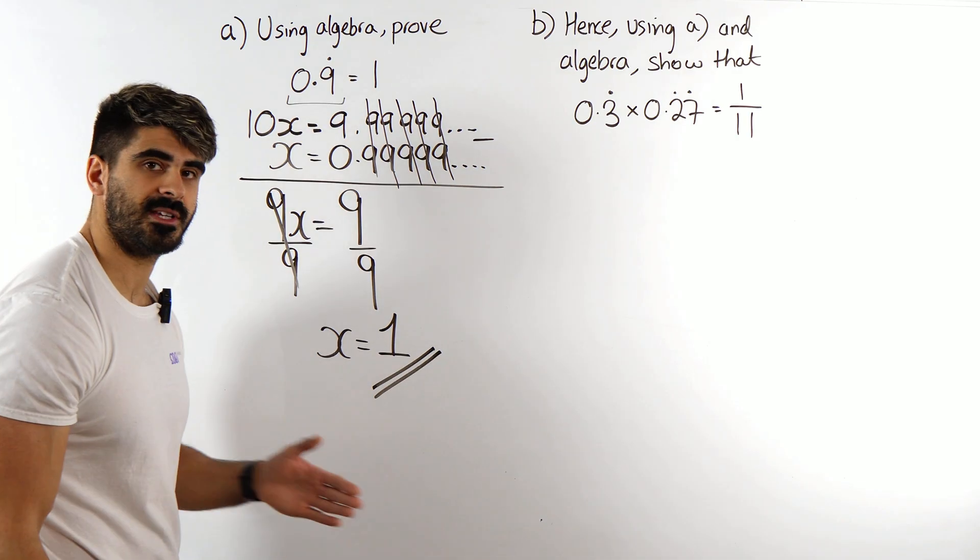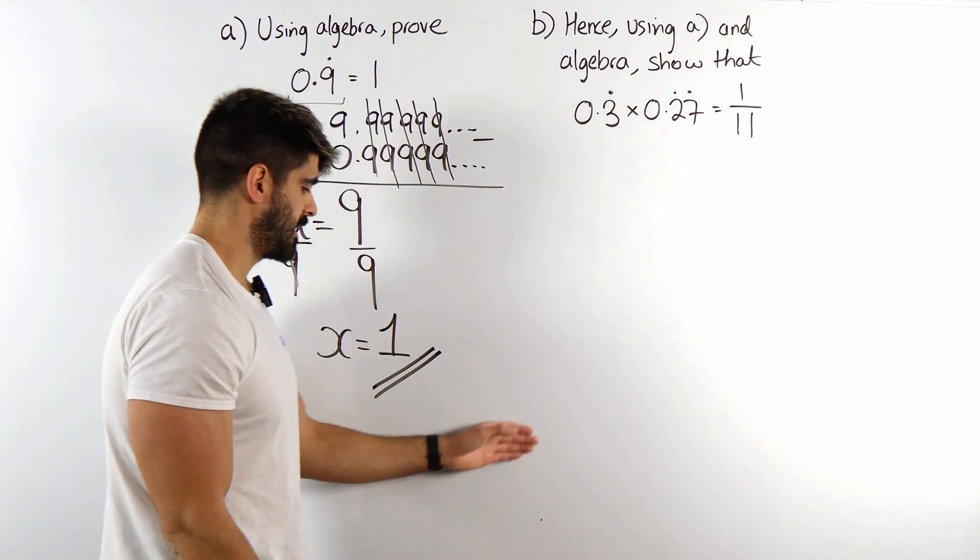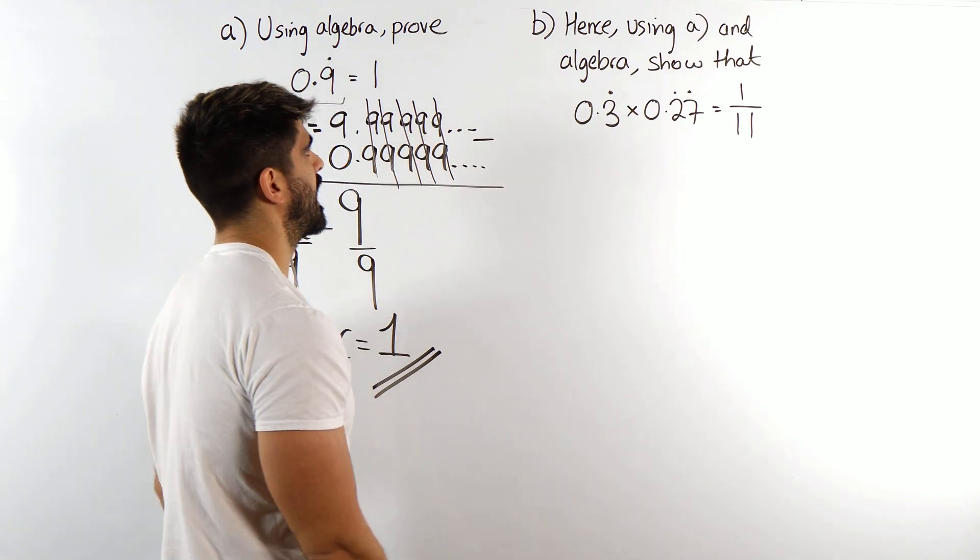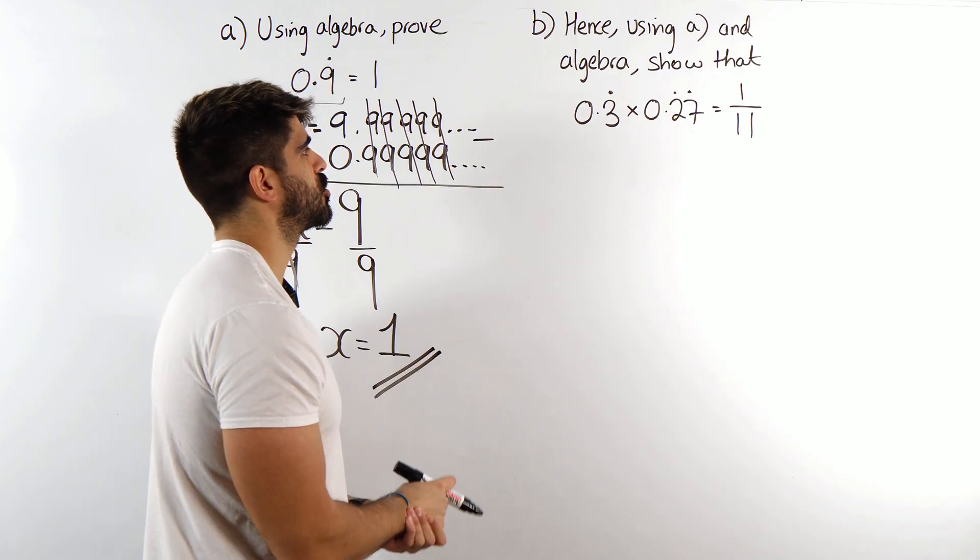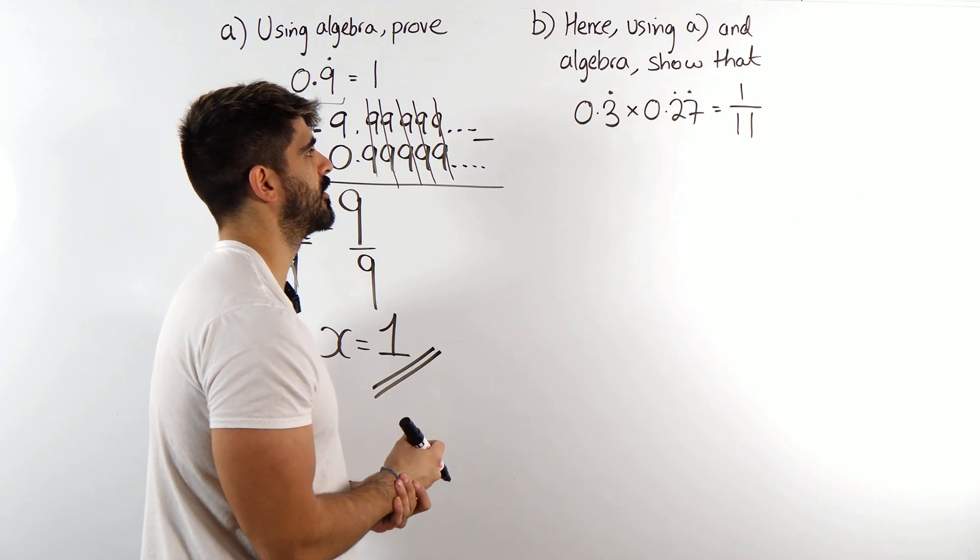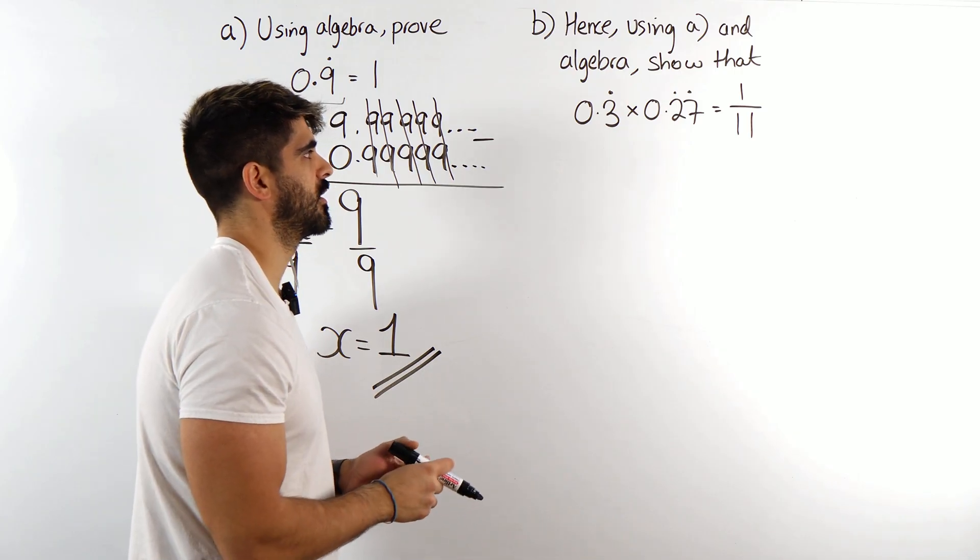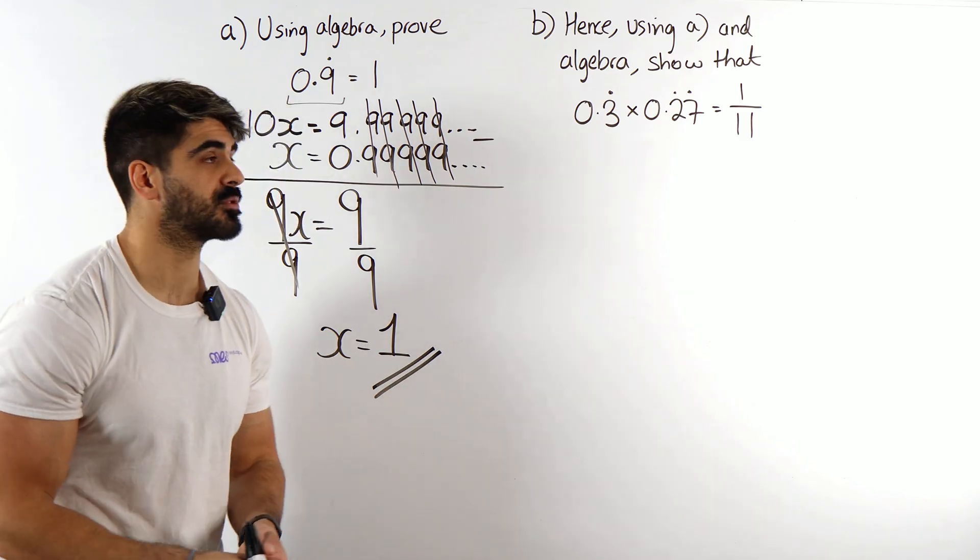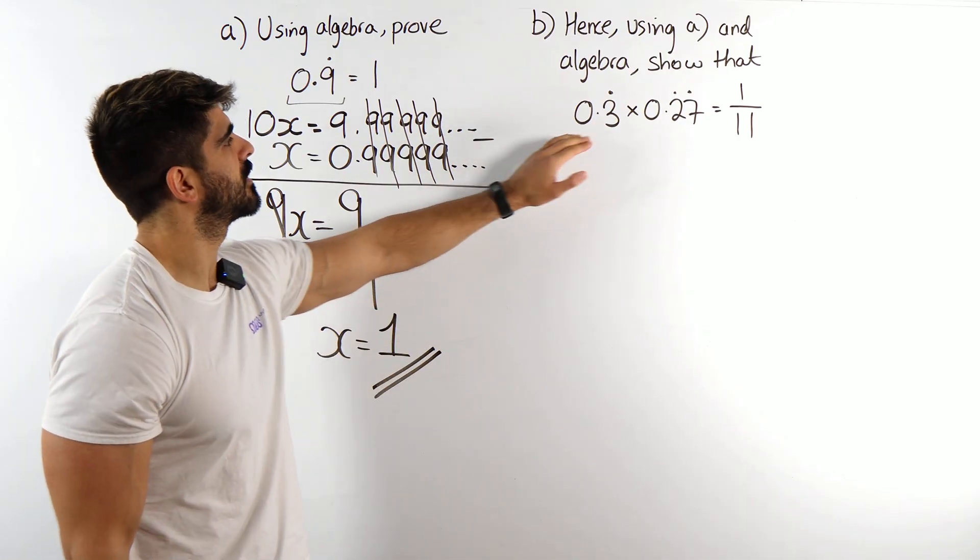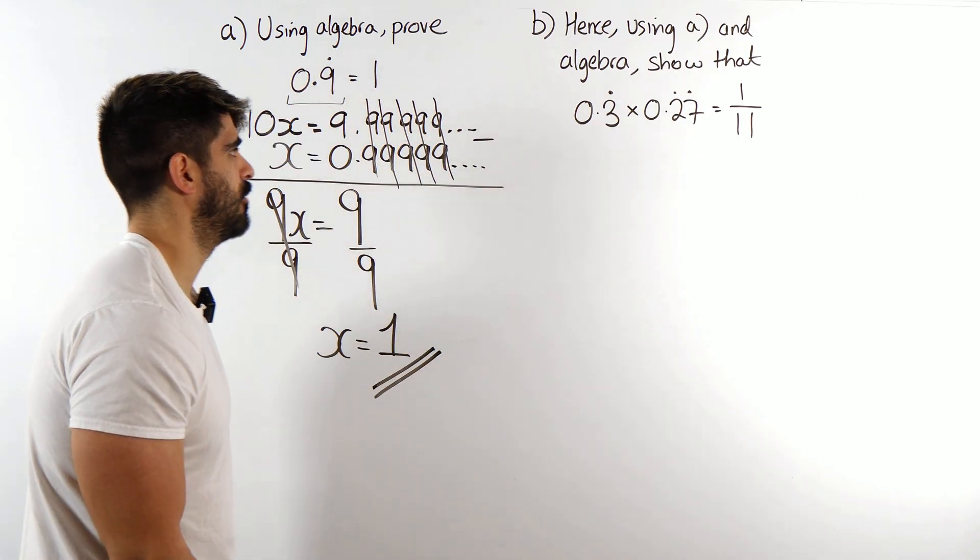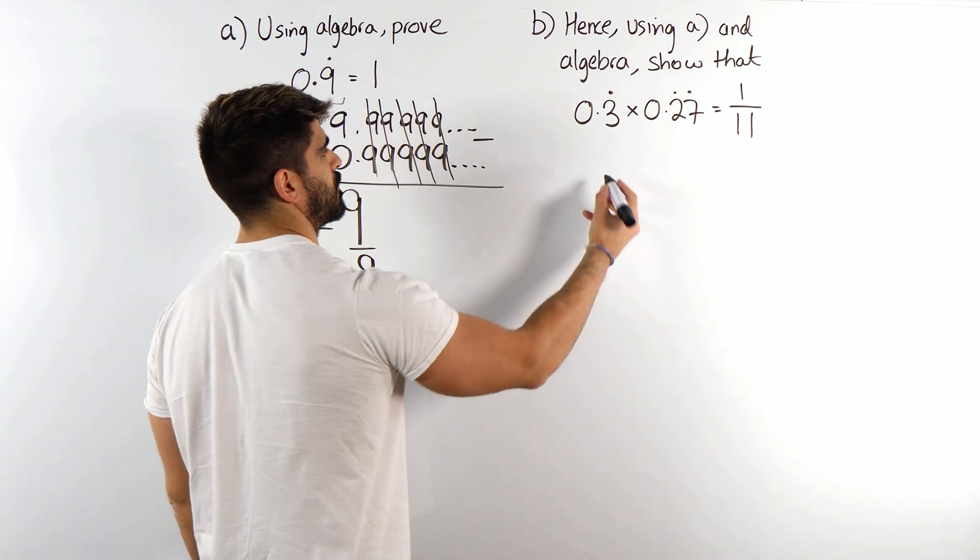A question like this can be 3 marks in your GCSE exam. Then part B is saying, hence using part A and algebra show that 0.3 recurring times 0.27 recurring is 1 over 11. Now they want you to somehow use part A for something. Well, 0.3 recurring, I can use 0.9 recurring to help me find out what that is as a fraction.